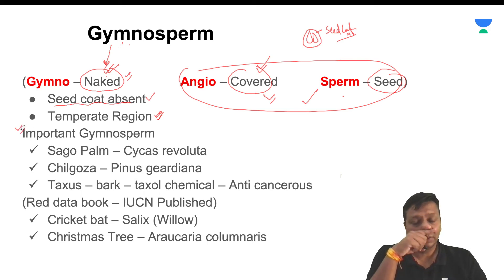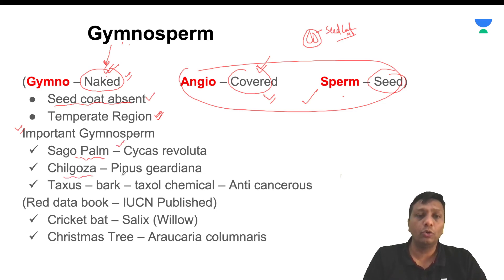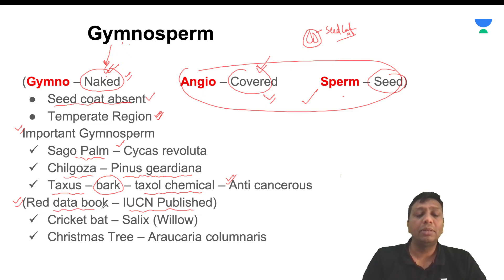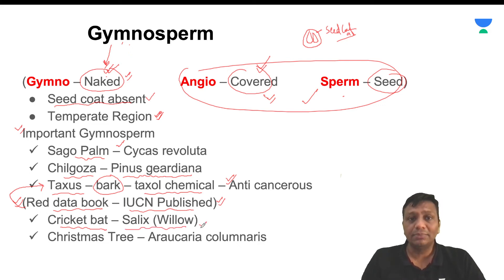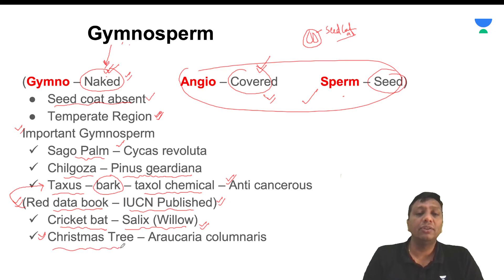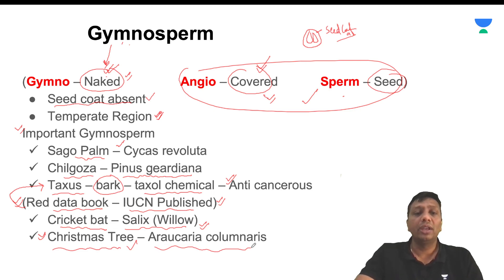Important gymnosperms you can see on screen: Sago palm is Cycas revoluta. Pinus, Taxus — whose bark contains the chemical Taxol used for anti-cancer medicines. Taxus is listed in the IUCN Red Data Book, meaning this plant is very rare in nature. The cricket bat is made from Salix or willow, and the Kashmiri willow also belongs to gymnosperms. The Christmas tree, which we celebrate on 25th December, is Araucaria columnaris.